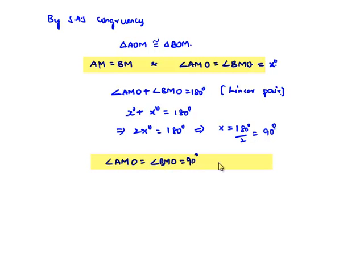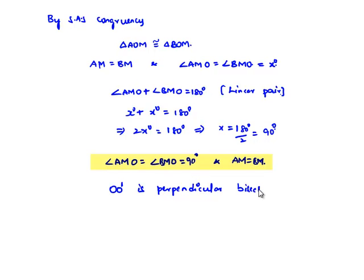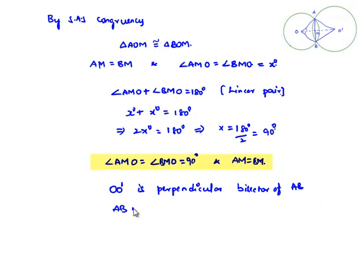We also have AM equal to BM. Therefore, OO' is the perpendicular bisector of AB, and the relation is mutual — AB is also the perpendicular bisector of OO'. This completes the required proof.